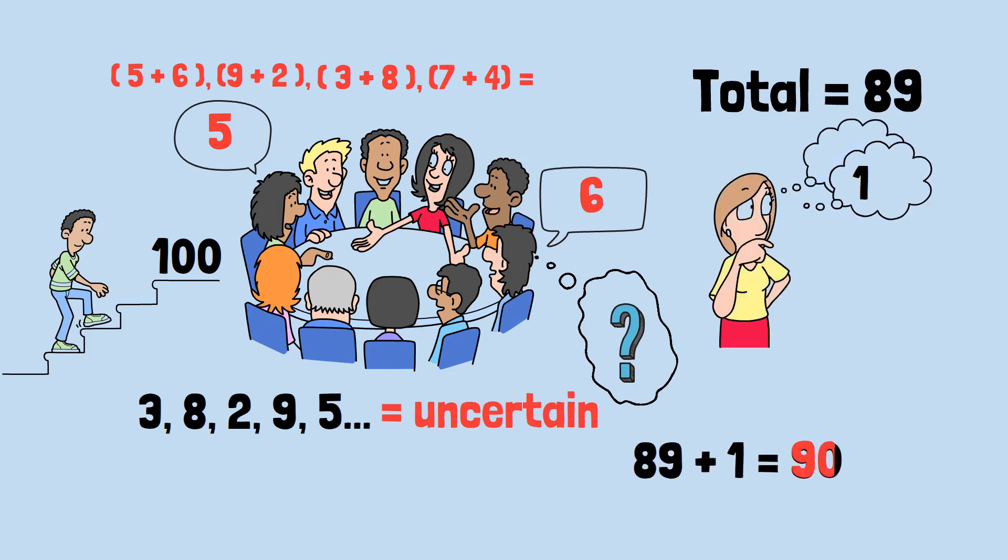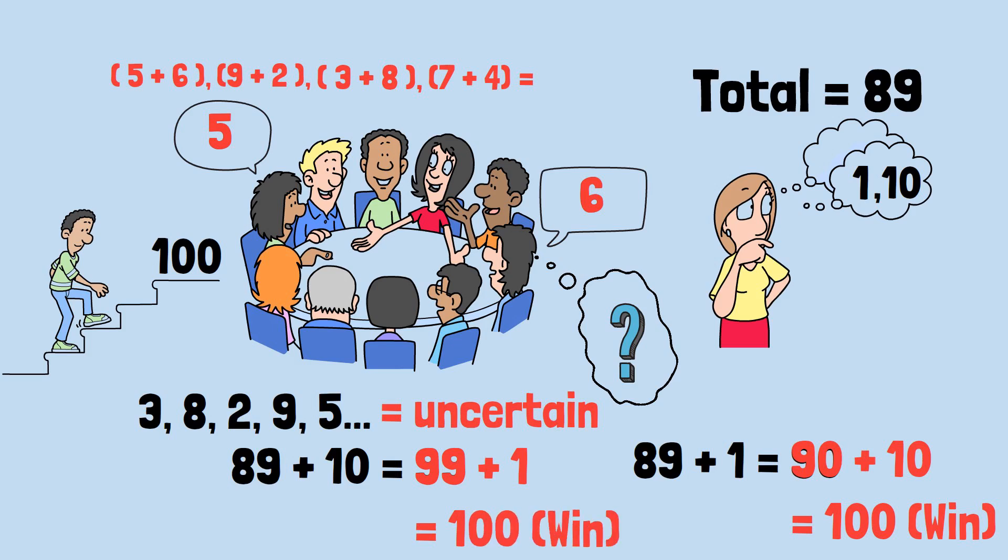1 gets you to 90, they can play 10 and win. 10 gets you to 99, they can play 1 and win. You realize with growing unease that you've been outmaneuvered from the very beginning.